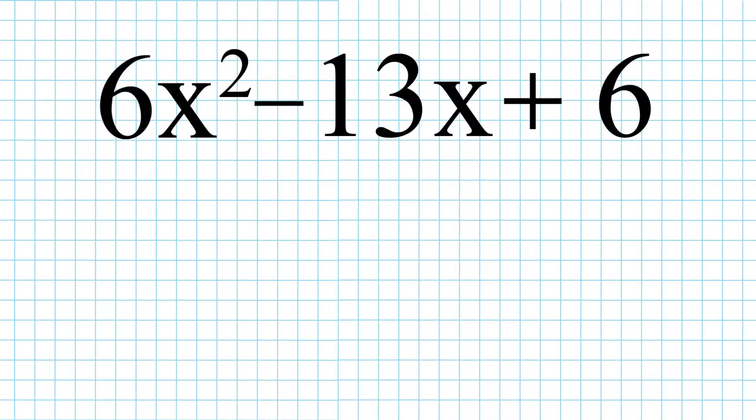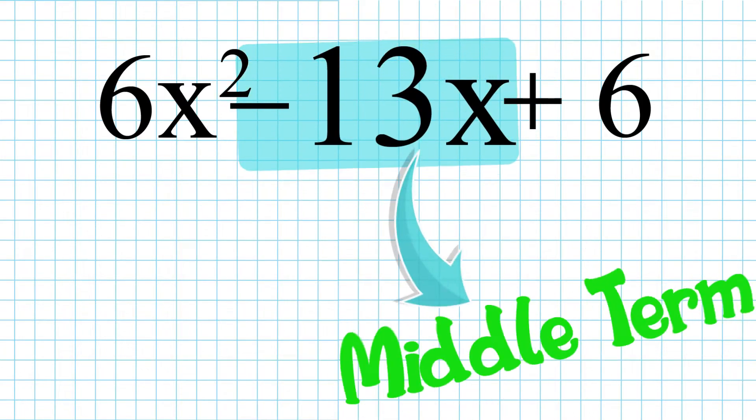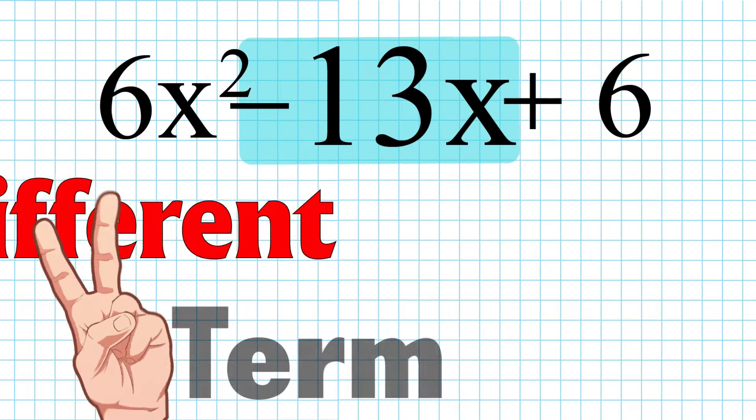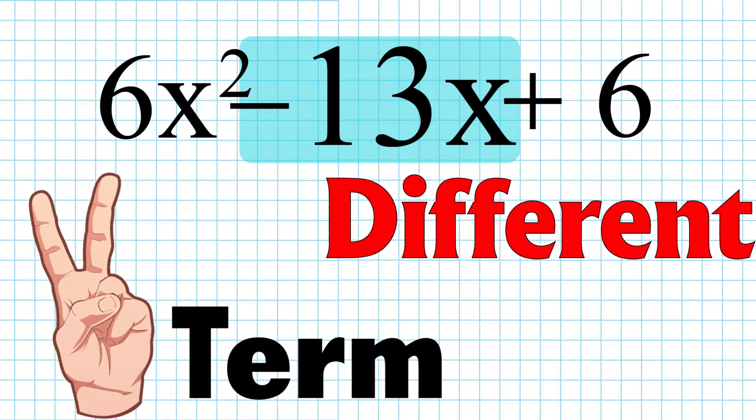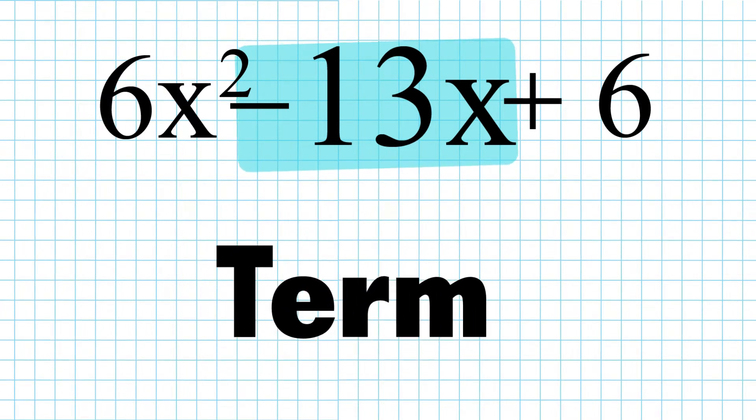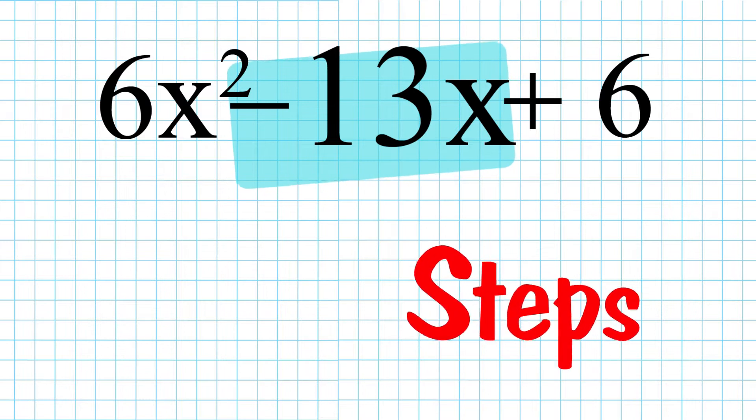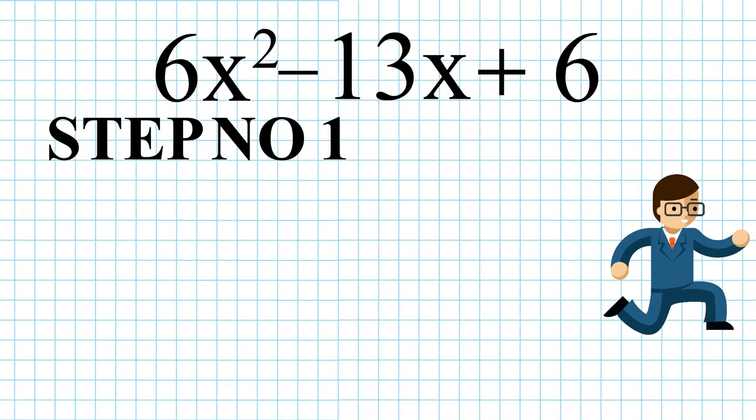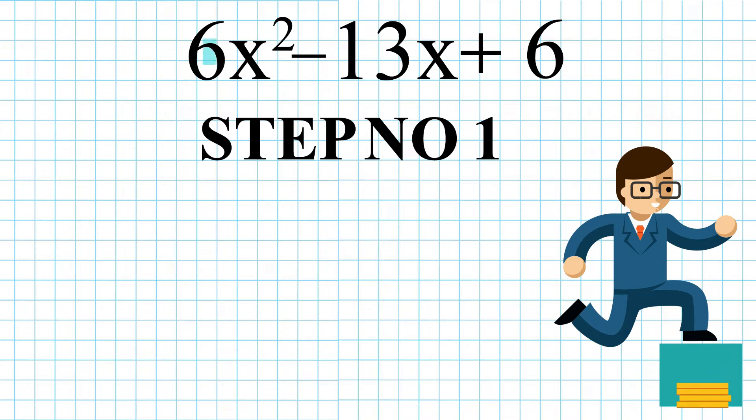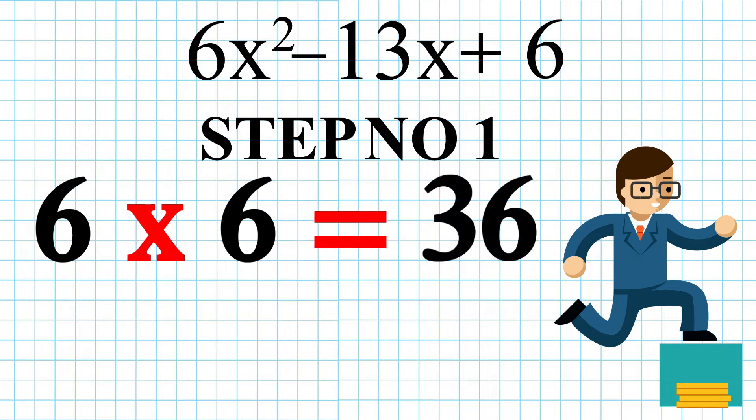Let's say we have an expression 6x squared minus 13x plus 6. In this equation, 13x is known as the middle term which should be split into two different terms. Before we split the term, we need to follow some steps. Step number 1. Find the product of the numbers from the first and the last term which is 6 multiplied by 6 is equal to 36.